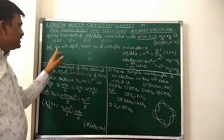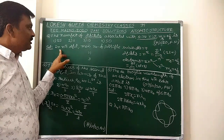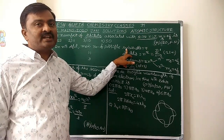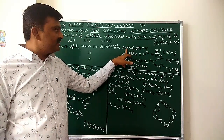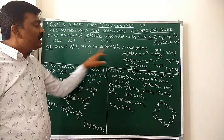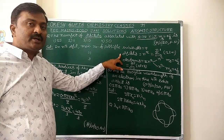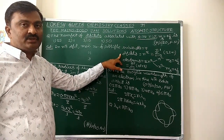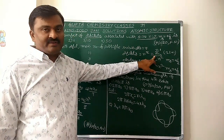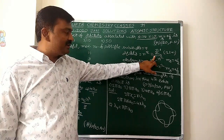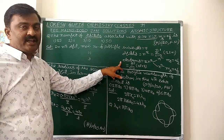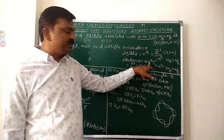In the given nth orbit, the maximum number of possible sub-shells, or maximum number of possible l values — each l value indicates one sub-shell — equals n. Next, the maximum number of possible orbitals, or maximum number of possible magnetic quantum number m values, equals n² .